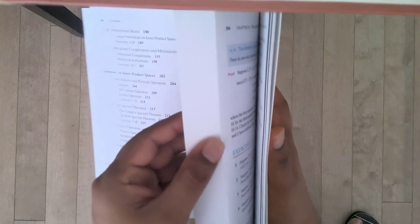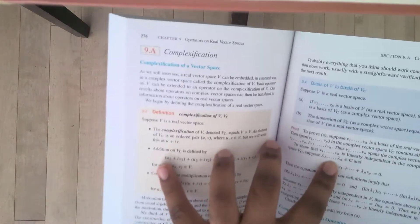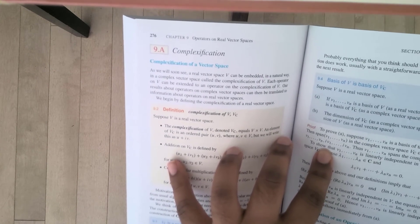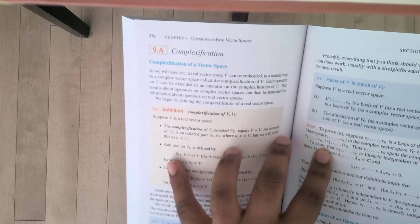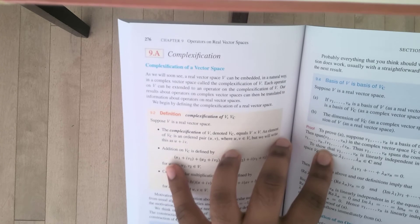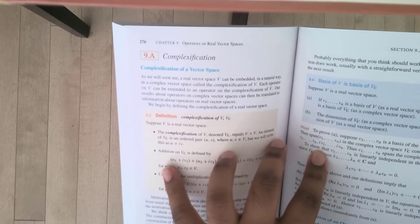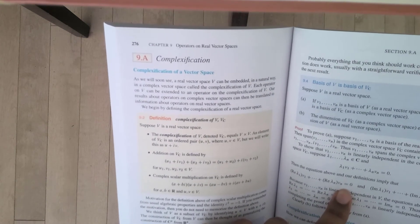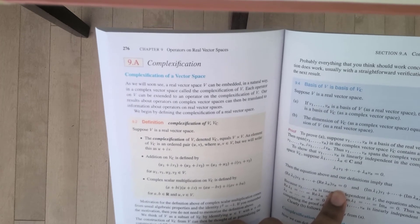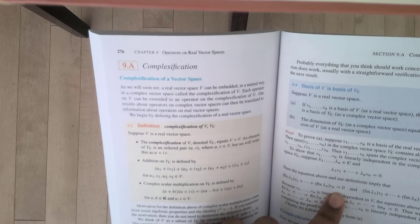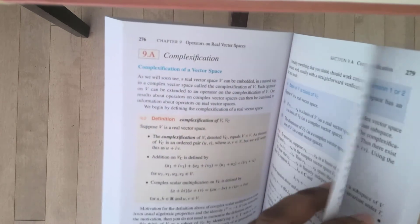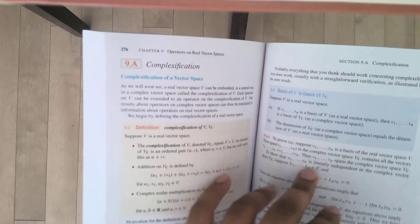If you look at page 276, this is complexification. It says, as we will soon see, a real vector space can be embedded in a natural way in a complex vector space called the complexification of V. Each operator on V can be extended to an operator on the complexification of V. The first time I came across complexification was when I was looking at some papers from mirror symmetry and stuff on geometric quantization. And I didn't even know what complexification was. So when I saw this book have an entire section dedicated to complexification, I was pretty happy with that. It's actually one of the reasons why I bought this book.